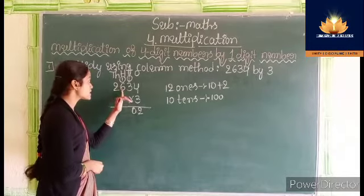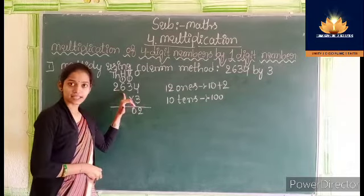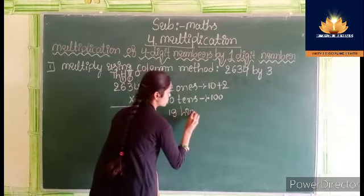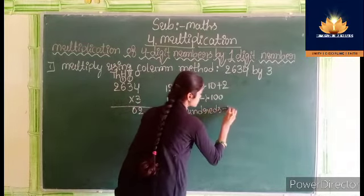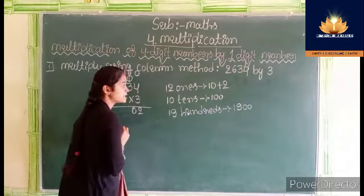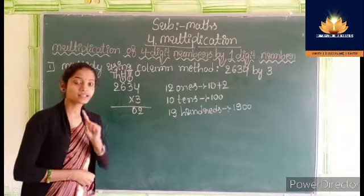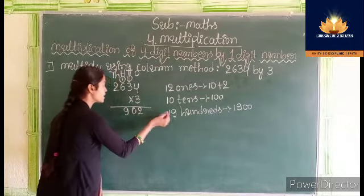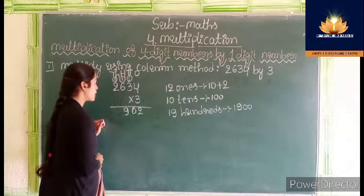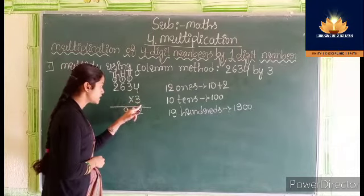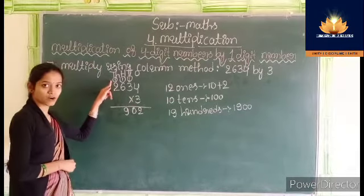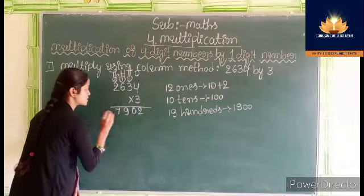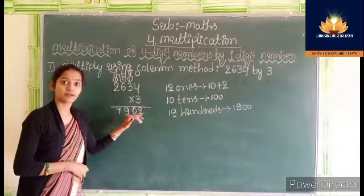Now we have to multiply 600 by 3. 3 sixes are 18. 18 plus 1 is 19. We get 19 hundreds, which means 1900. In 1900 there are 9 hundreds and 1 thousand. So 9 should be written below the 100s column. Then carry 1 to the 1000s column. Now multiply 2000 by 3. 3 twos are 6. 6 plus 1 is 7. We get 7000. Write 7 below the 1000s place. We get 7902 as the product.